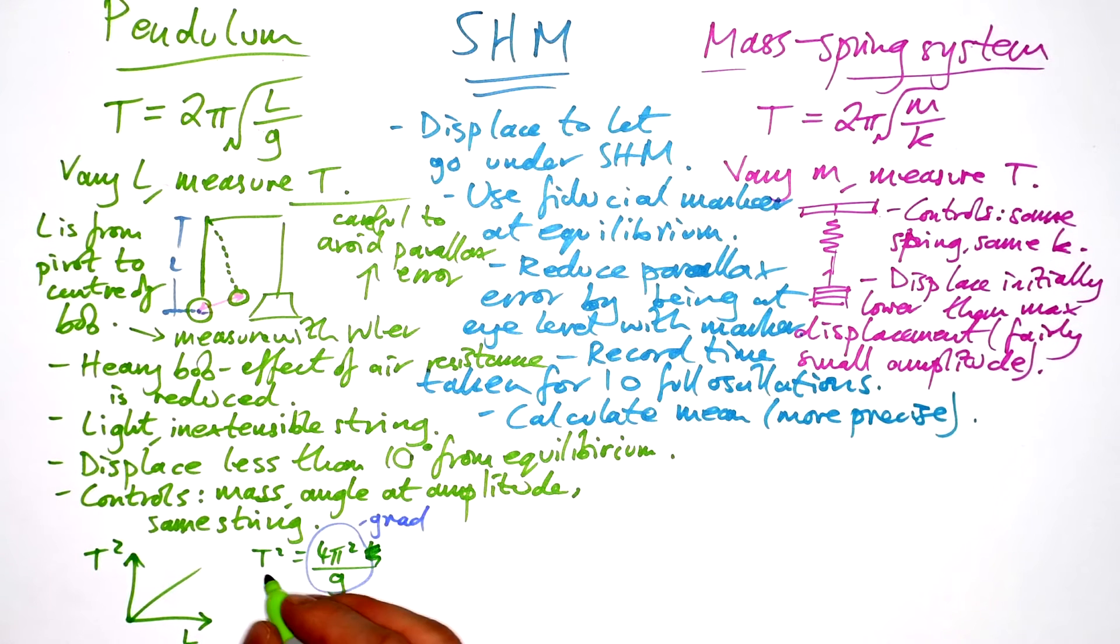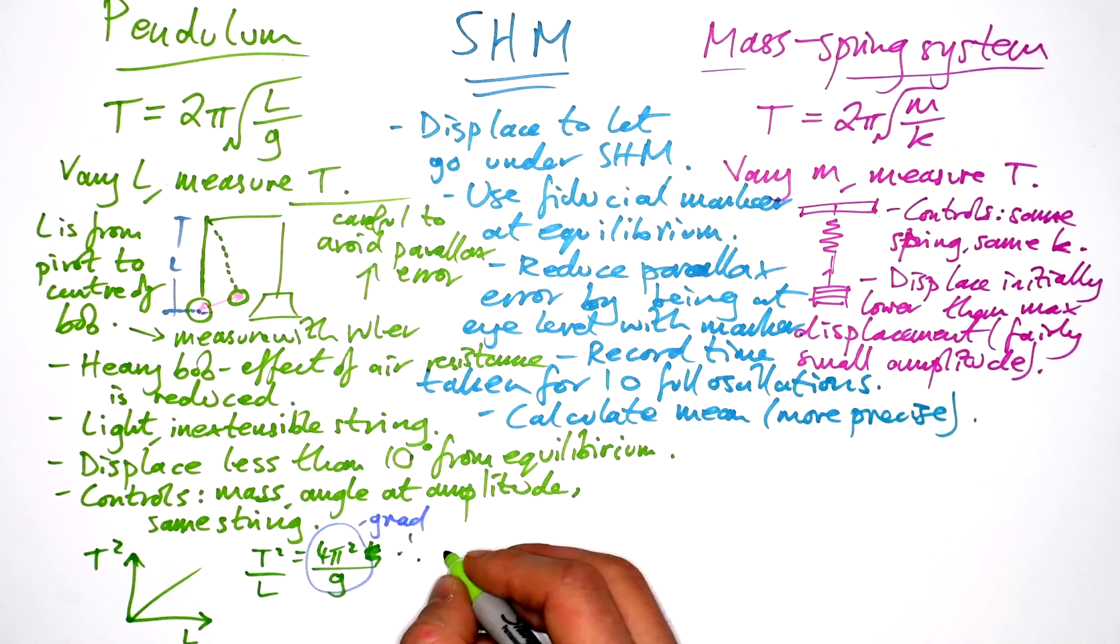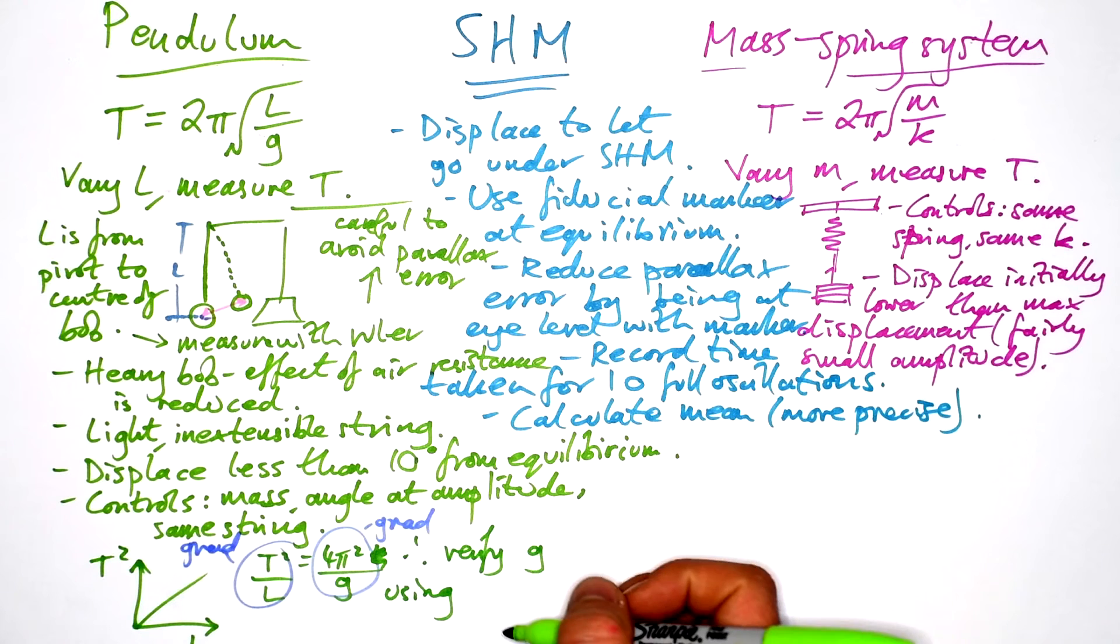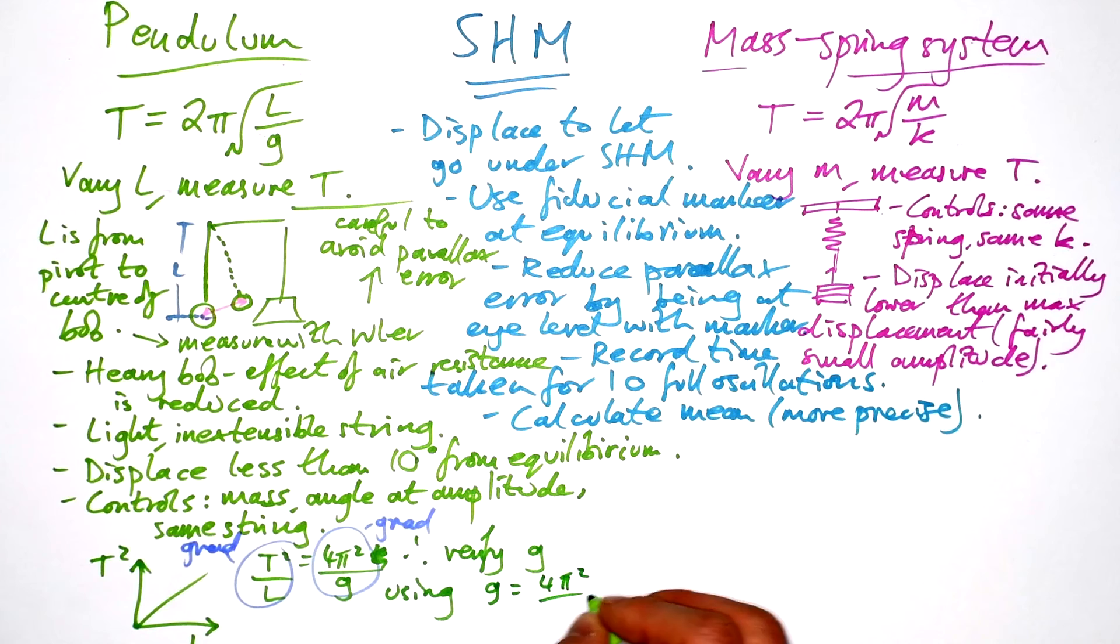So therefore, we can verify g using, well, if this is our gradient, then we can say the gradient equals 4π² over g. So g is equal to 4π² over the gradient.